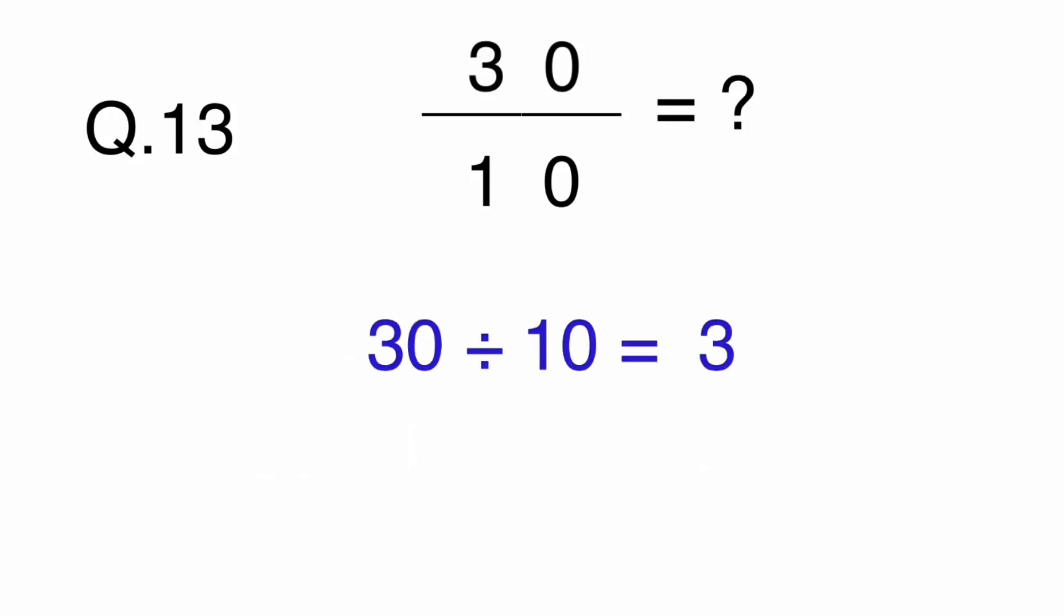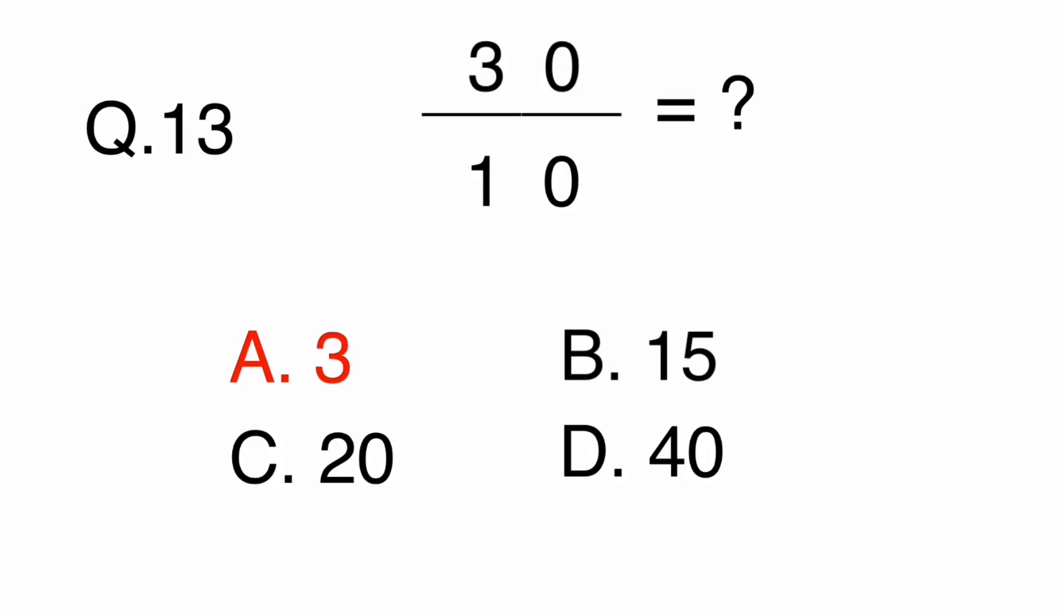30 tenths means 30 divided by 10 equals 3. If you want to make sure the answer is correct, you can do 3 times 10 which equals 30. The answer is A, 3.